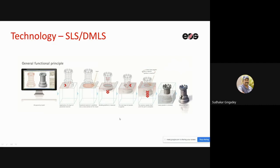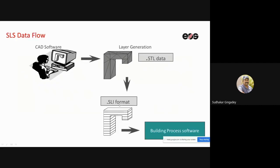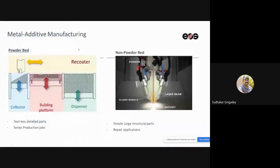The SLS process uses CAD data converted to STL and slice data. DMLS works similarly: powder is spread by a recoater, a laser solidifies each layer, and the bed descends — the excess powder is collected. In directed energy deposition (non-powder-bed), a laser beam melts powder deposited directly at the build point using high energy — this is more suited for repair applications.